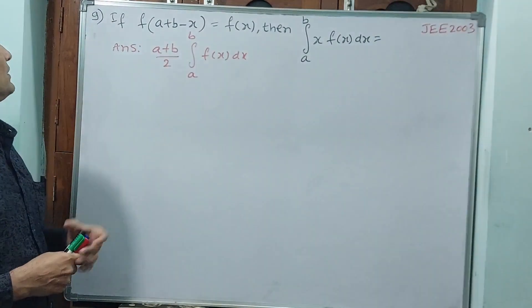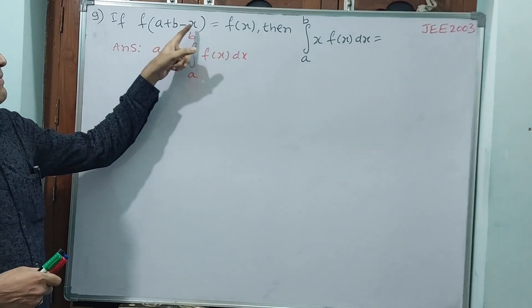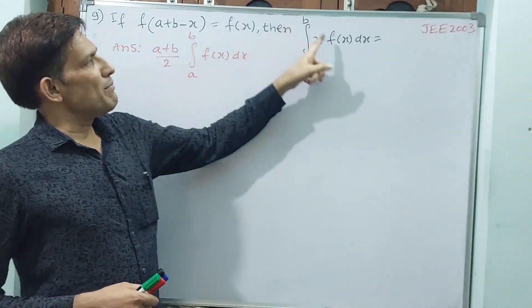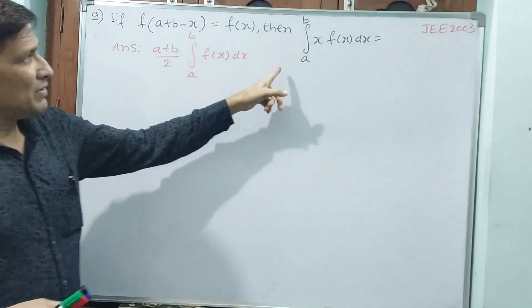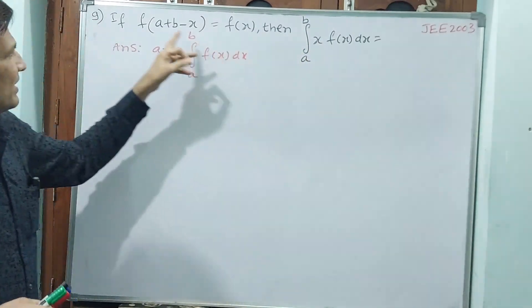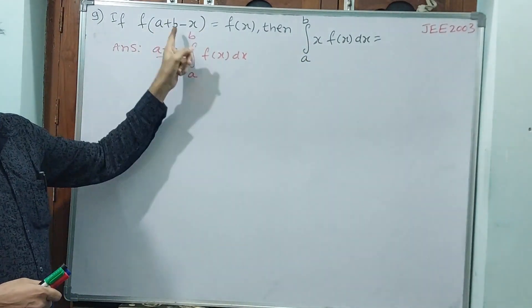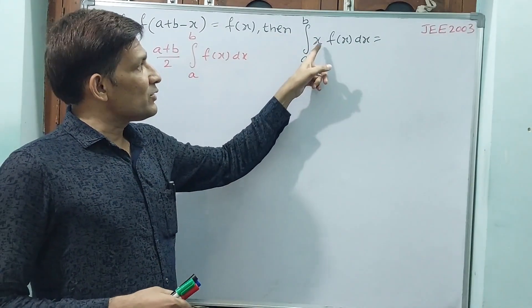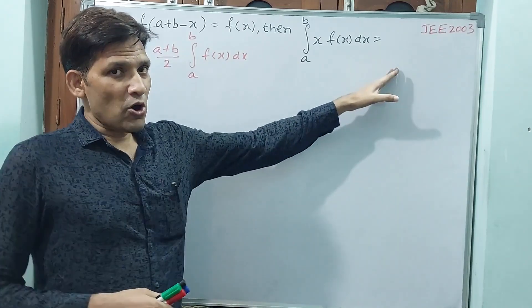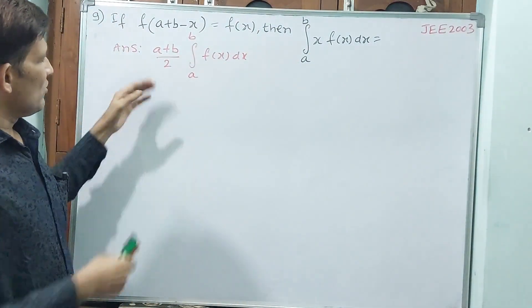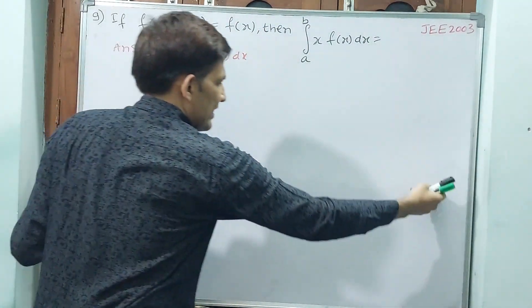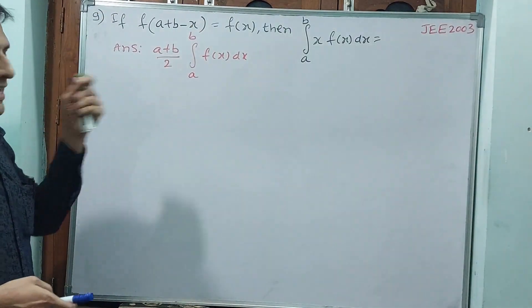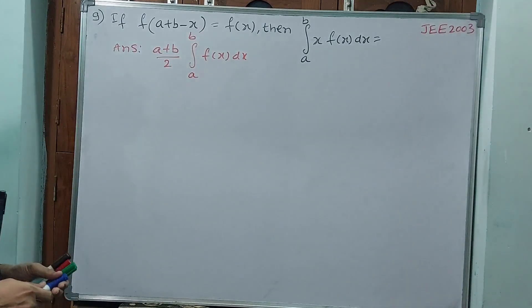See question number 9: if f of (a plus b minus x) is equal to f of x, but see, this will be the integral, and outside the function is also mentioned like this. Then the integral will be x into f of x dx — how much? Four options are given. I don't like writing the big answers because the board is going to get occupied, that is why I have not written them. Direct answer I have written. This is simple only.